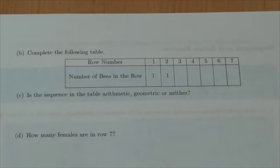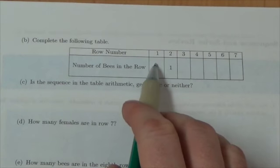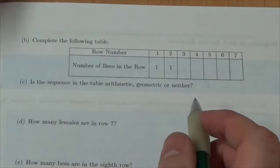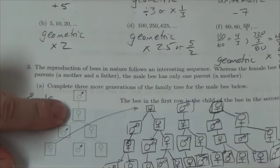All right, part B of this question about the bees. So complete the following table. Well, rows 1 and 2 each had 1 in them. So row 1, row 2.